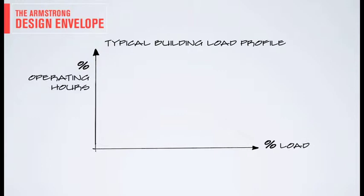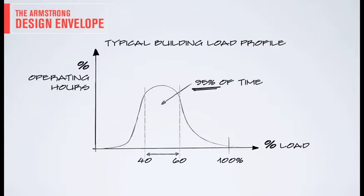HVAC is a part load industry. Although we design and specify systems to meet peak demands, most systems operate at only 40% to 60% capacity, 95% of the time or more.